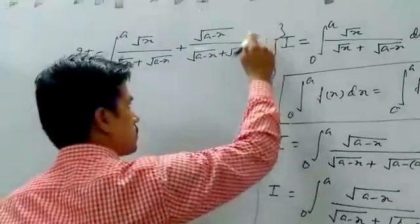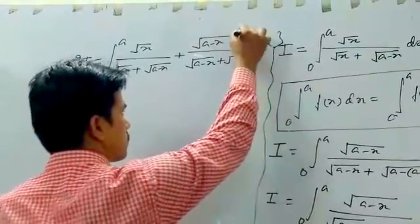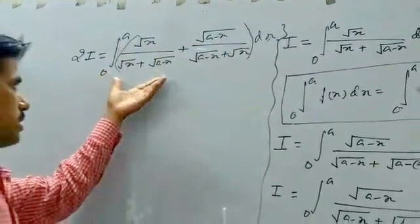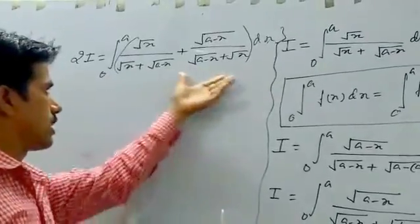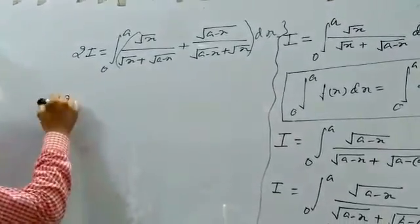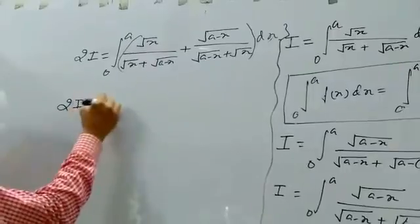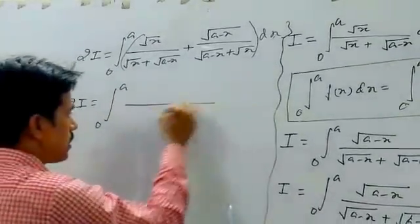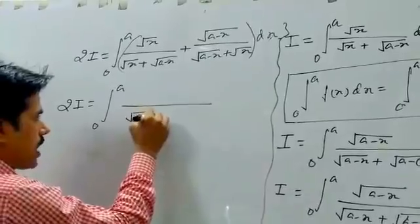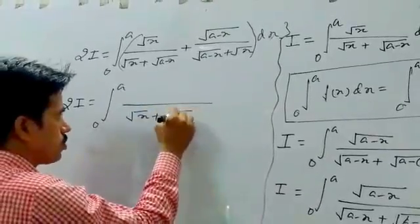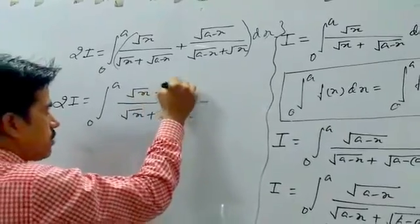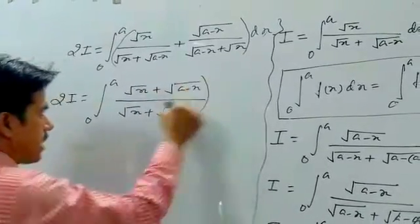dx. We observe these two terms, their denominators are same. That's why 2I is equal to integral from 0 to A of square root of x plus square root of A minus x divided by square root of A minus x plus square root of x dx.